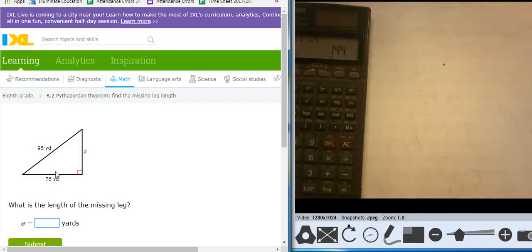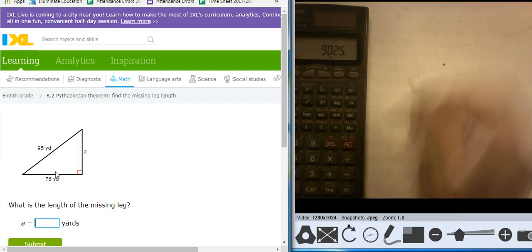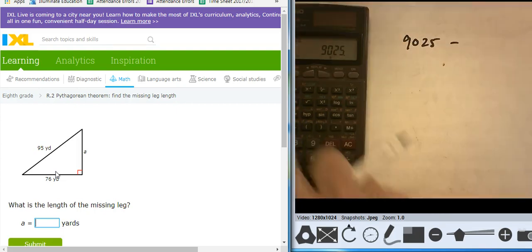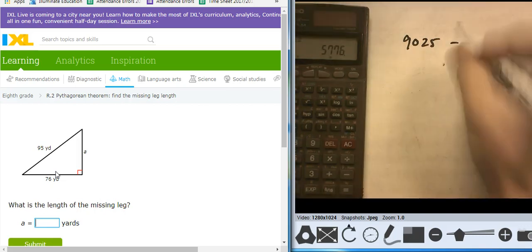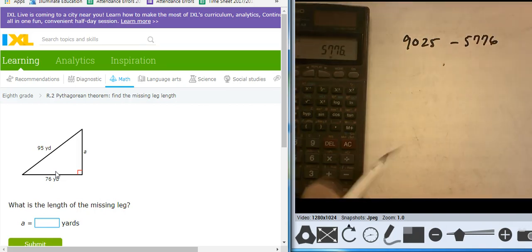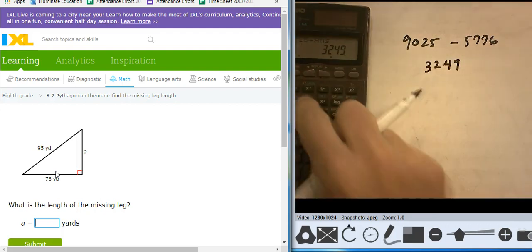It's going to be 95 squared, which is 9,025, minus 76 squared, 5,776. Let's subtract those. Takes me to 3,249. Take the square root of that,